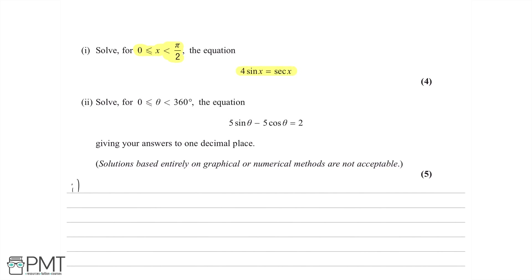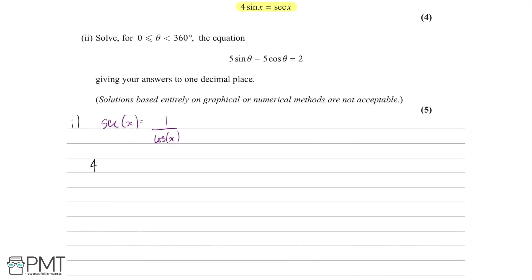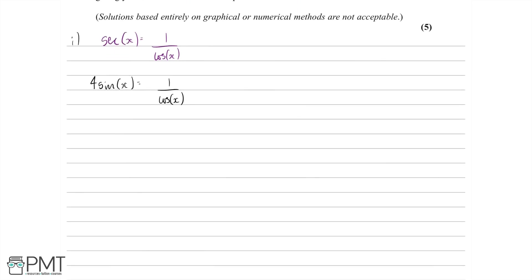The first thing to notice is that sec x is just 1 over cos x. So we're left with 4 sin x equals 1 over cos x. Let's multiply both sides by cos x to simplify, giving us 4 sin x times cos x equals 1.